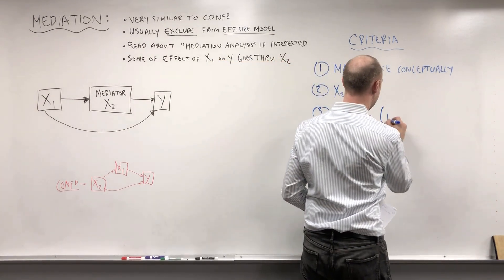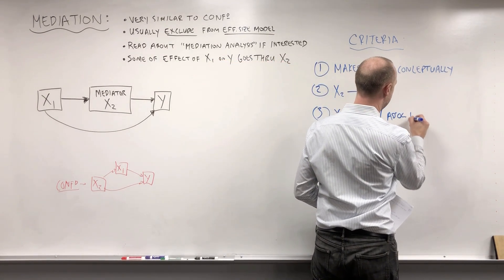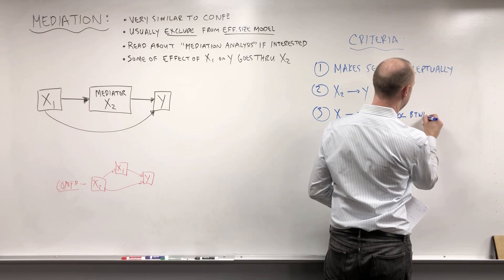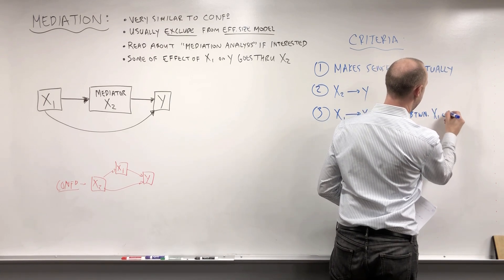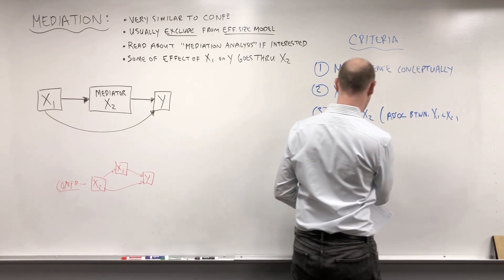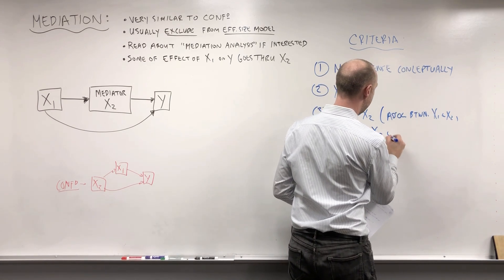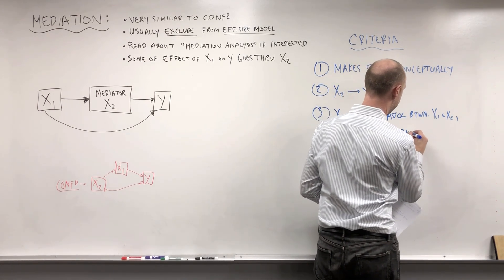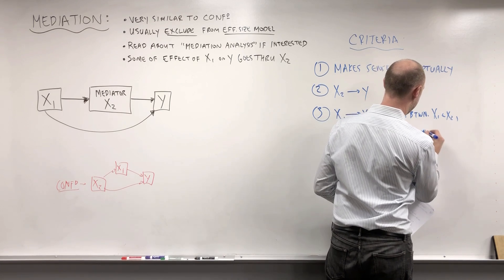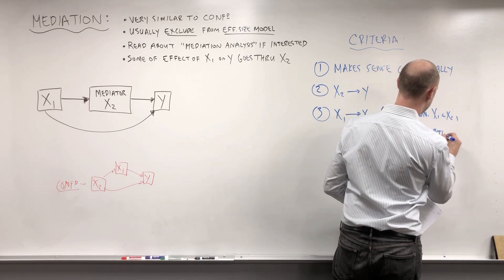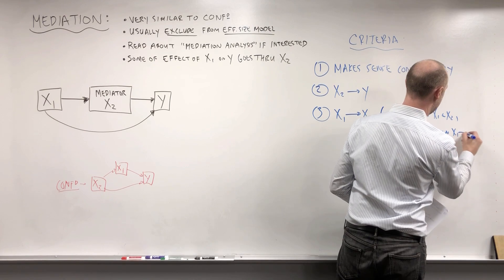What we're going to want to see is that x1 directly affects x2. So there's an association between x1 and x2 with x2 on the pathway between x1 and x2.